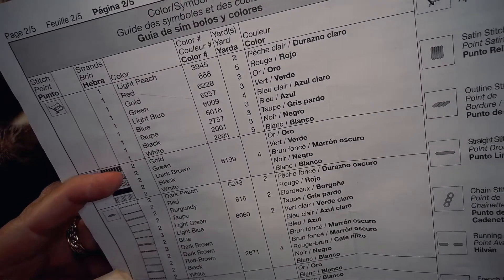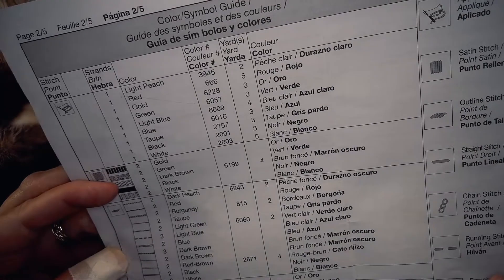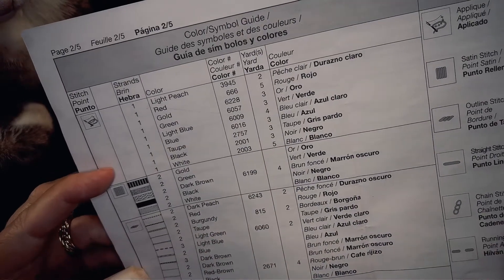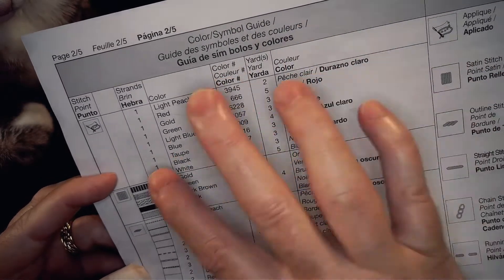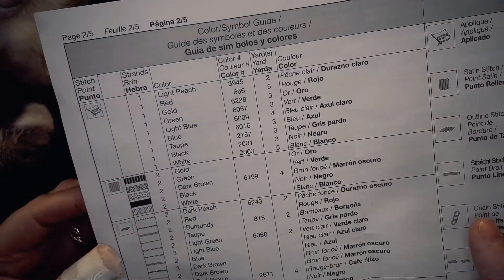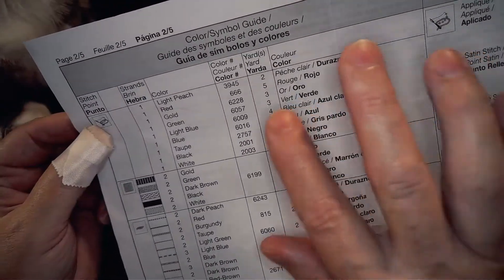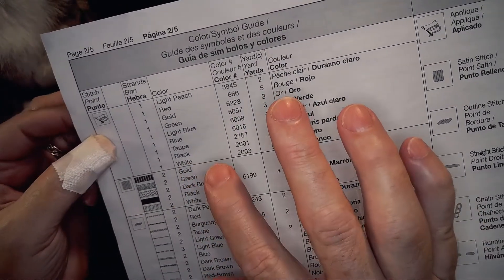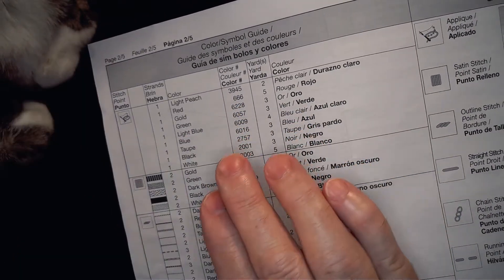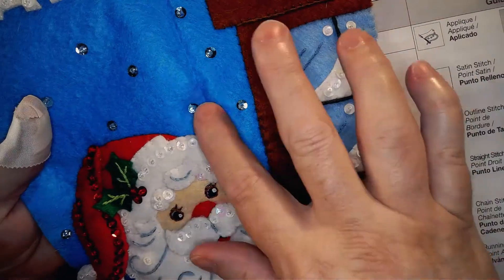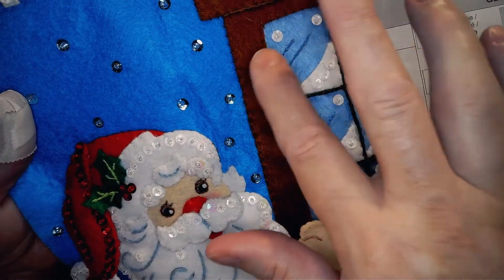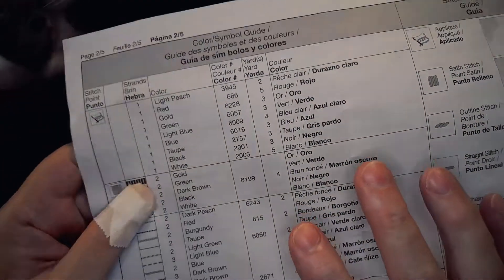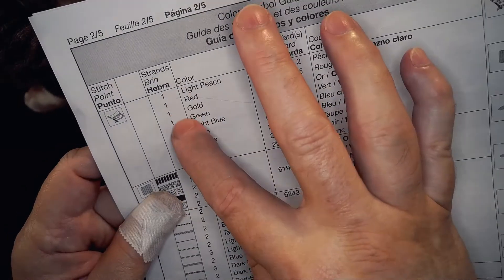All right, your information for the number of strands of floss that you need to be working with is on this page of your instructions. For me, it's page two, but you'll need to look for a kind of a graph or a chart that looks like this. So the first thing that you are probably going to do with your kit is applique. And applique means to cut out the pieces of felt and to sew them down onto the main piece of the stocking.